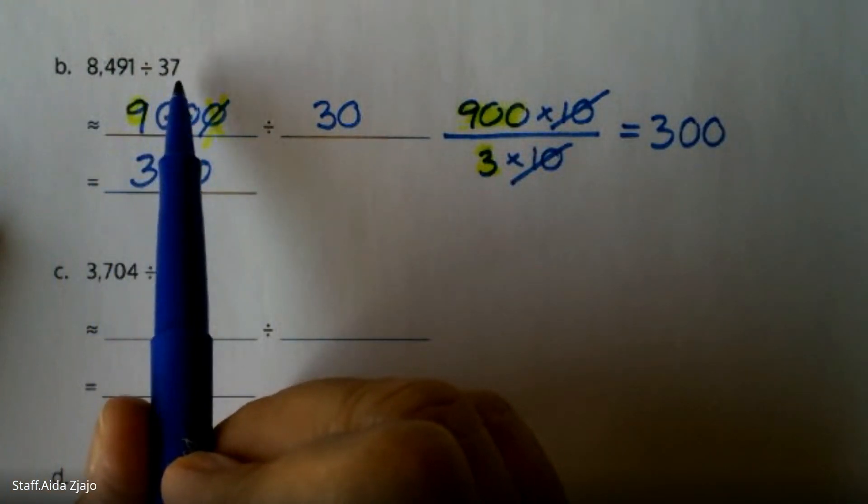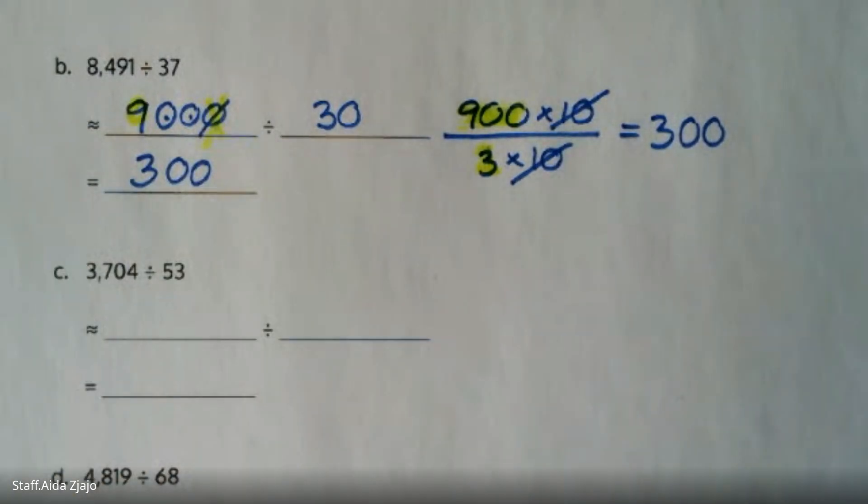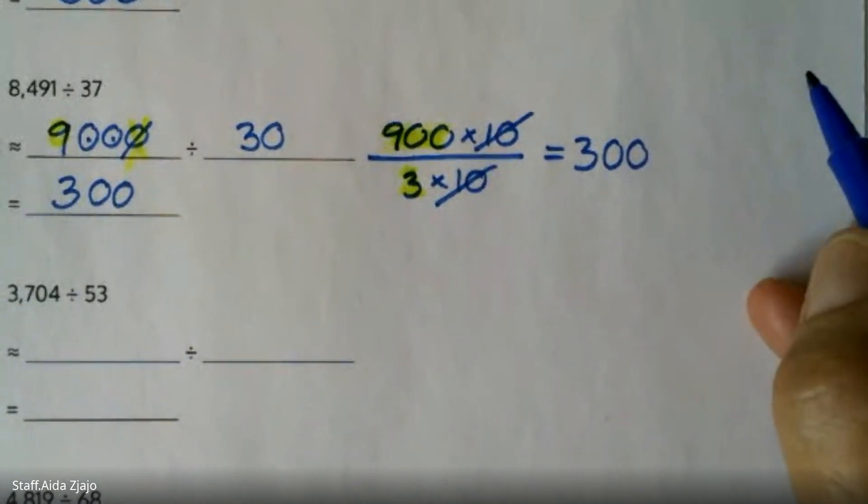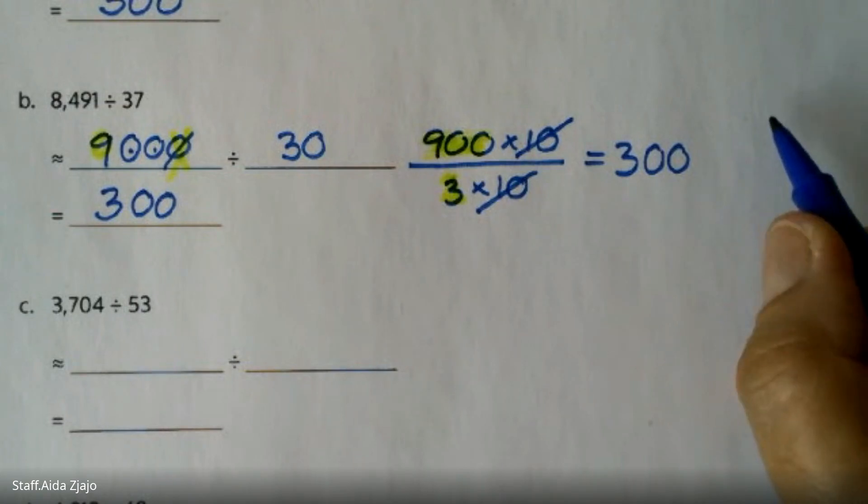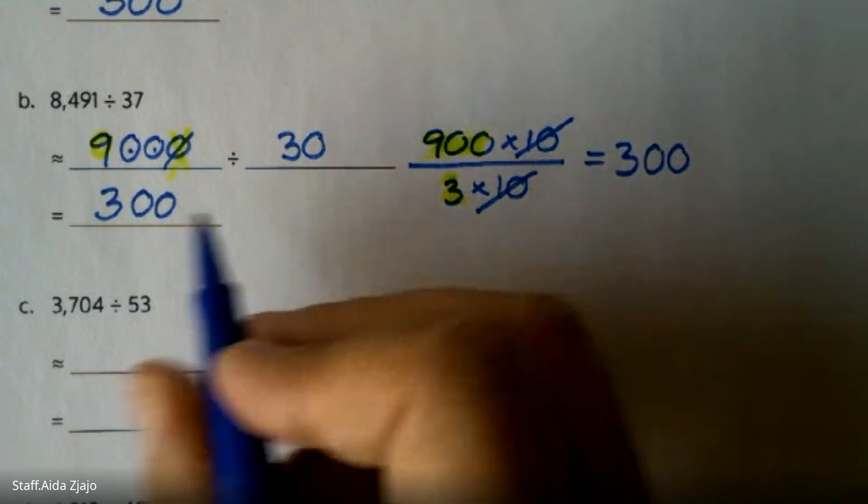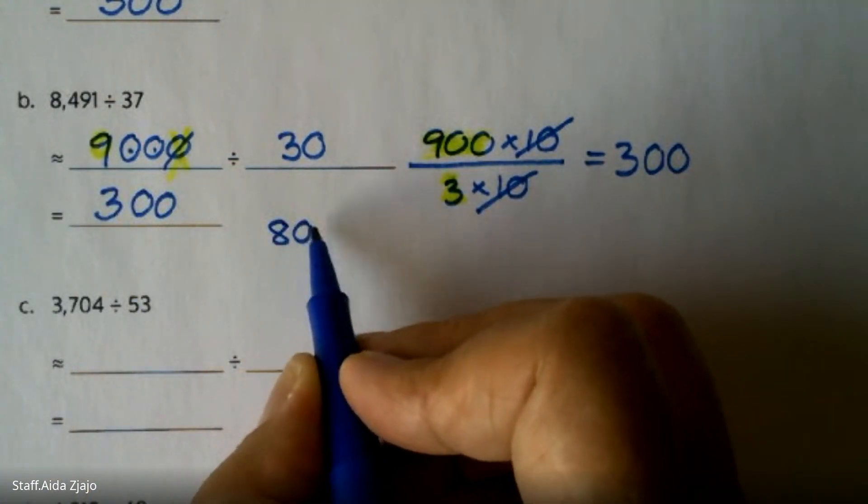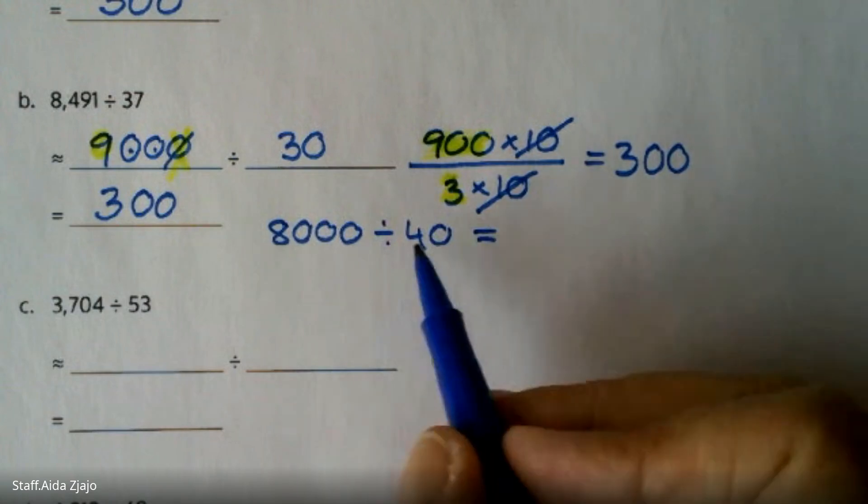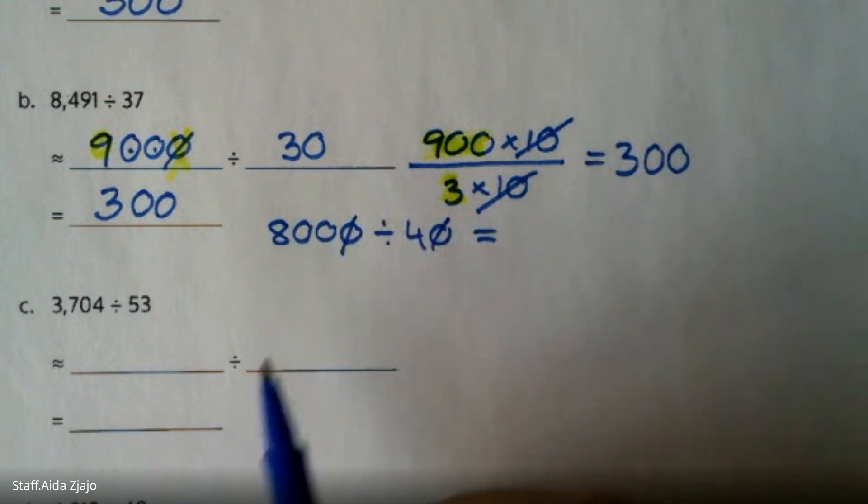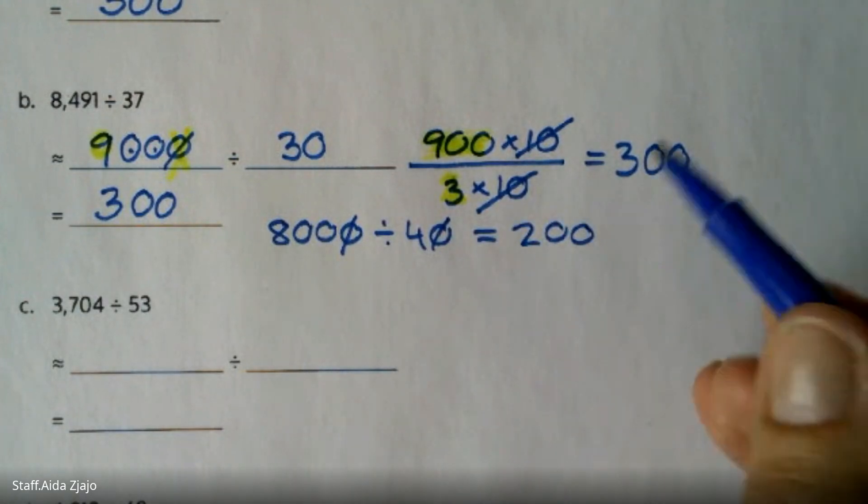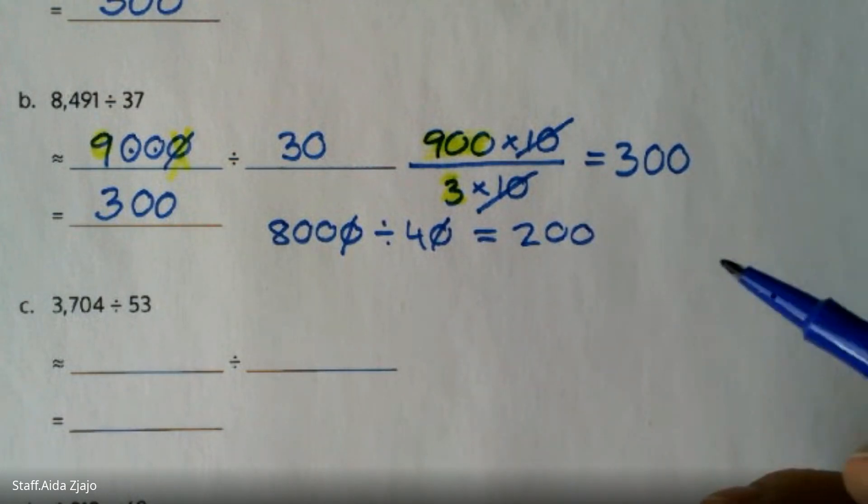You could also do 8,000 divided into 40, so your estimate will be a different value. If you do 8,000 and divide by 40, it's the same thing. You're going to cancel one zero. 8 divided by 4 is 2, so the real answer is in between 200 and 300. Both estimates are okay.